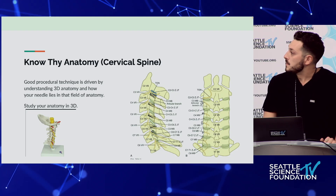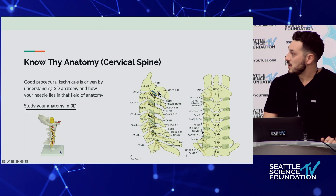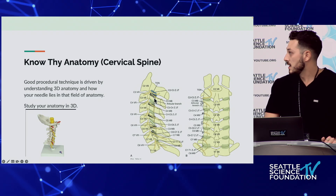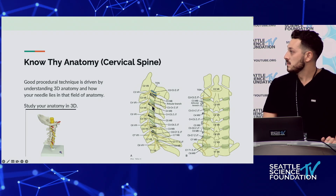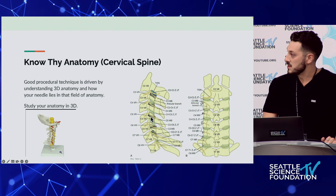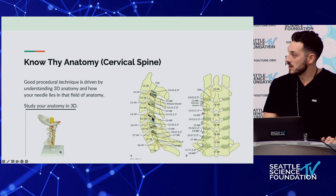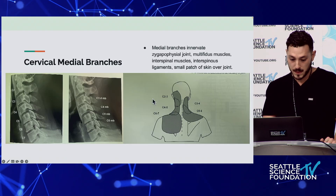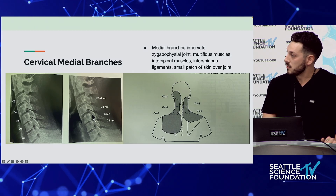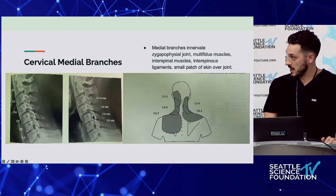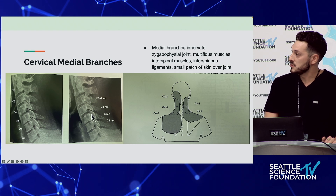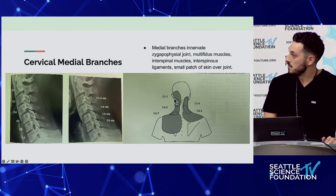I always think third occipital nerve for patients with posterior headache pain. The medial branches come along the articular pillars - the third occipital nerve and C3 run along the superior aspect of the articular pillar, C4 is a little bit more inferior, and C5 is kind of midline. C5 usually runs midline and they go superior up. On fluoroscopy, C5 is in the middle, C4 is a little bit more superior, and C3 is up. These are your most commonly treated areas.